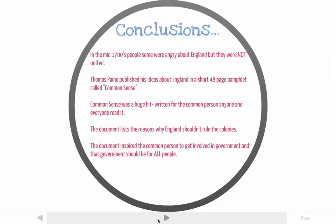To conclude: in the mid-1700s, people were angry about England but were not united and did not have a common goal of independence. Thomas Paine then came along and wrote this short pamphlet called Common Sense about his ideas on independence. It was a huge hit — written for the common person, anyone could read it, and everyone did read it. The document listed reasons why England shouldn't rule the colonies, inspired the common person to get involved in government, and set forth the idea that government should be for all people.